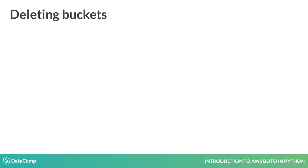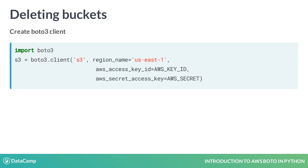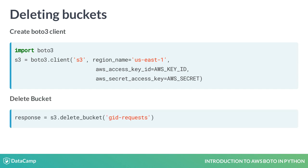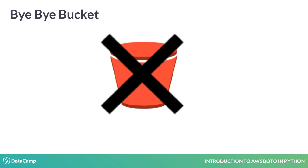Let's say we don't need the GID requests bucket anymore — let's delete it. We create the Boto3 S3 client, then we call the deleteBucket method. Alas, our bucket is gone. If we tried to delete it and it didn't exist, we would have gotten an error.